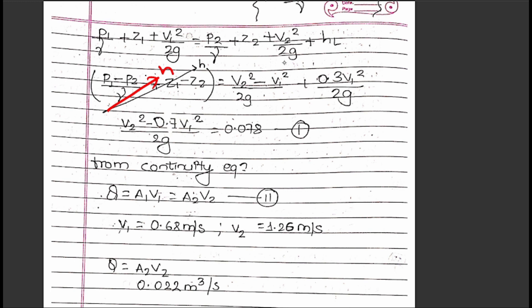So 0.078 = (V₂² - 0.7V₁²)/2g. Now from continuity equation...